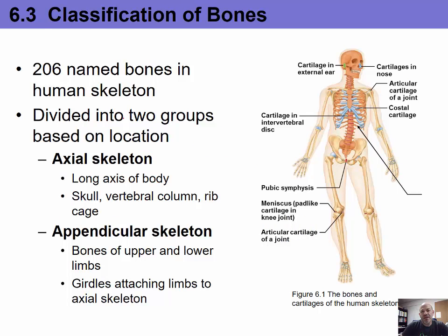There are 206 bones in the human skeleton, divided into two groups. The axial skeleton forms the long axis of the body and is colored brown in our model. It includes the skull, the vertebral column, and the thoracic cage or rib cage. The appendicular skeleton includes the bones of the upper and lower limbs and the girdles that attach the limbs to the axial skeleton.